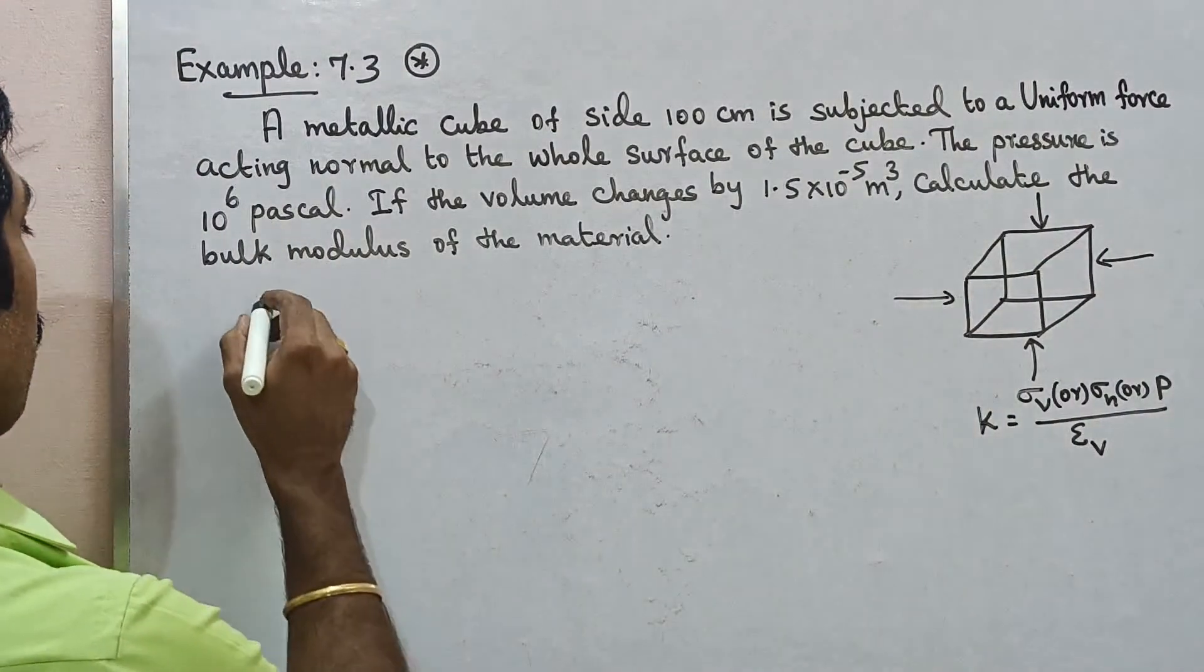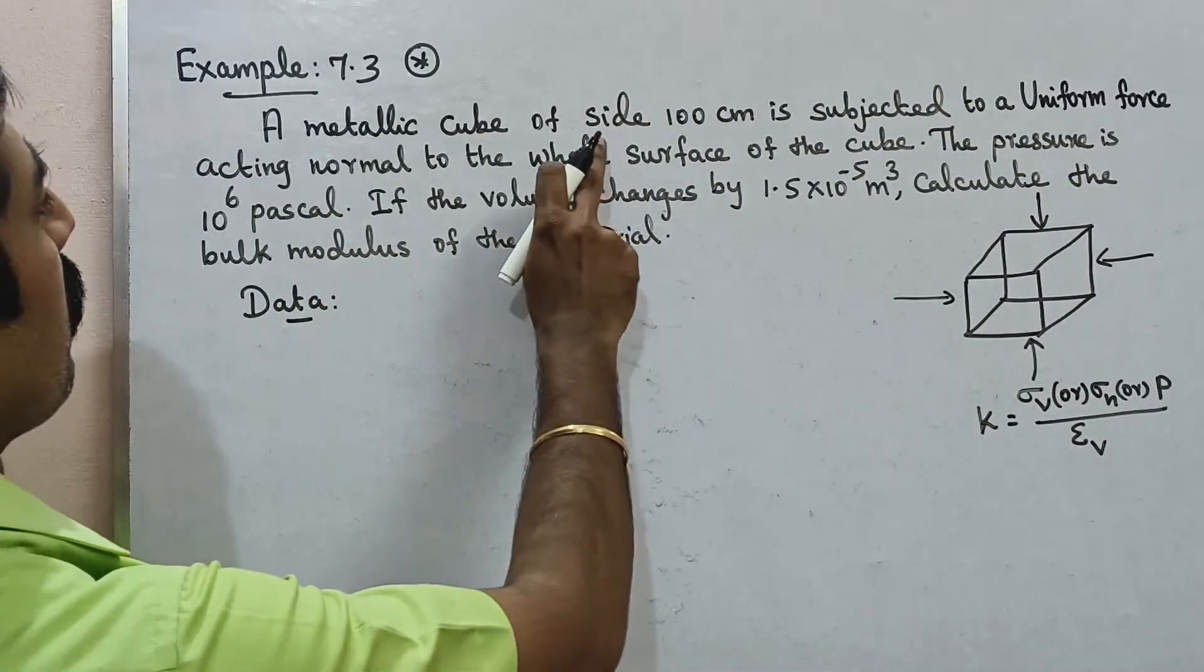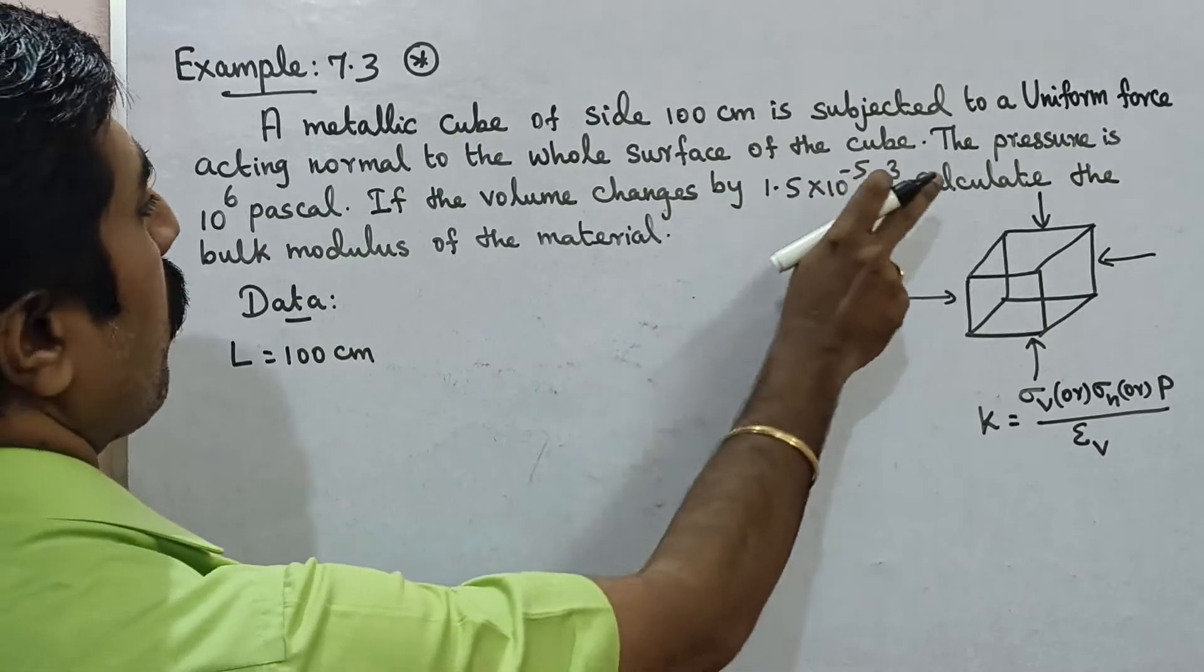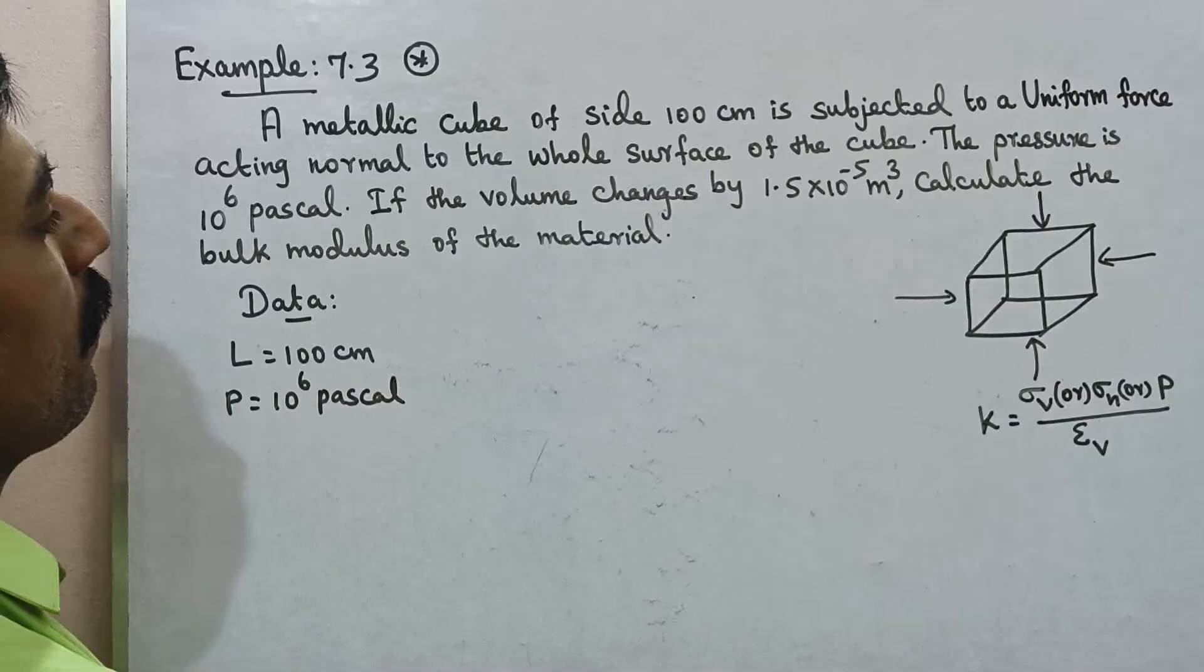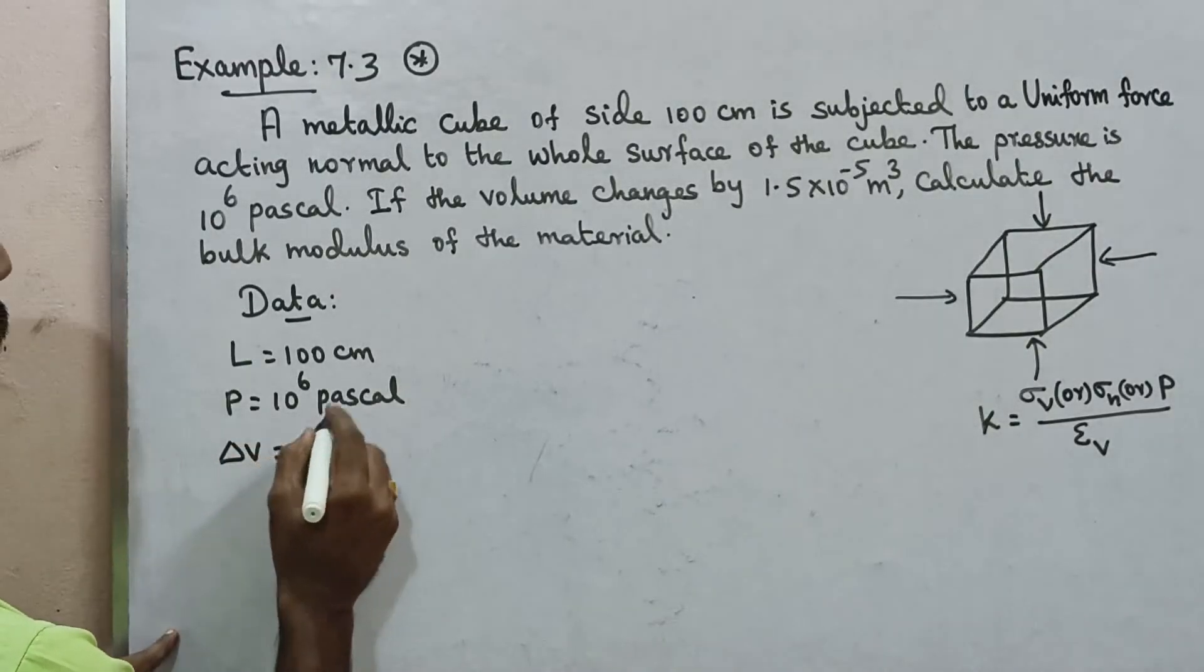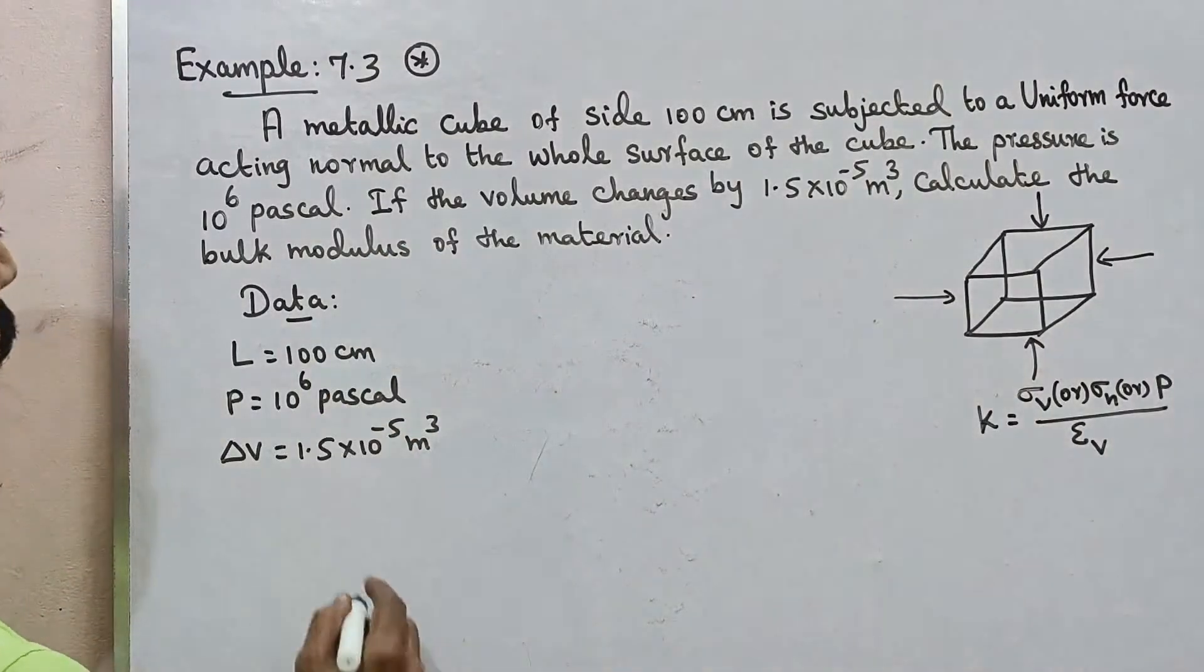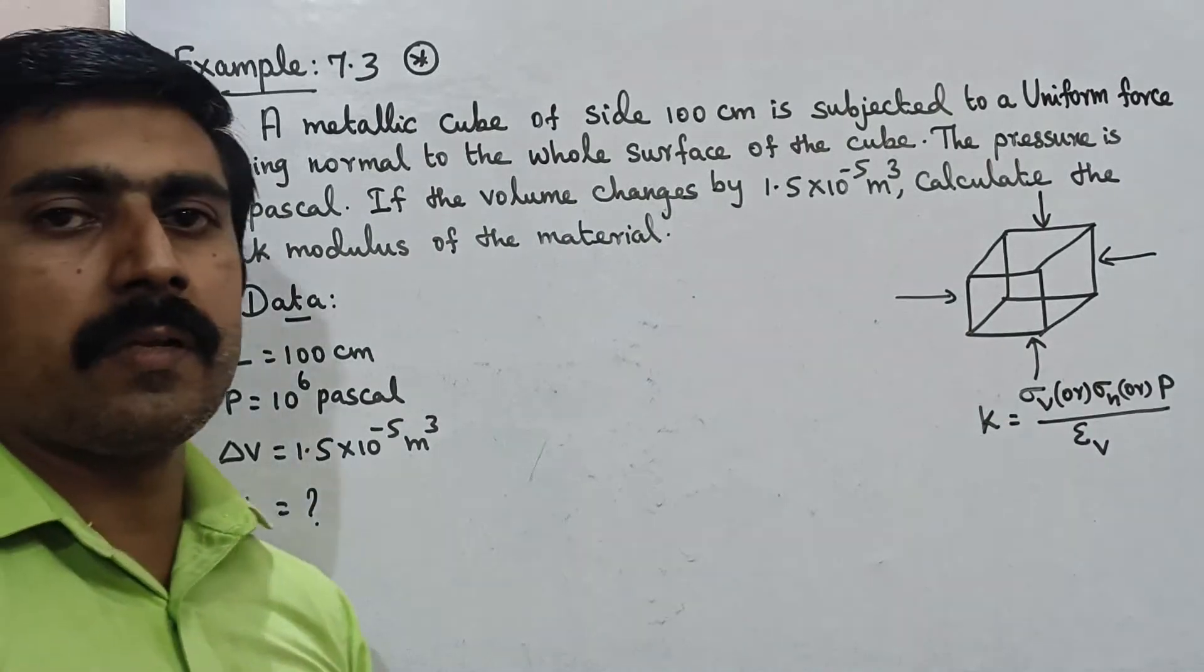Anyway first we need data. First we need, so side length L is equal to 100 cm. Pressure P is equal to 10 power 6 Pascal. Volume changes, that means change in volume delta V is equal to 1.5 into 10 power minus 5 meter cube. Then calculate the bulk modulus. K is equal to question mark. Now solution.